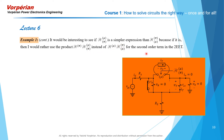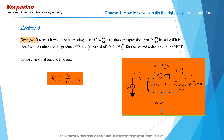Looking into port mu with port pi shorted: shorting pi sets V_pi to zero, causing the dependent current source to drop out. With the generator gone, V_T appears directly across R_CE, and the test current I_T flows entirely through R_CE since there is no current in the other branch under null conditions. So R_mu_pi turns out to be simply R_CE — indeed simpler than R_pi_mu — so we will use this second form for the second-order term in the 2EET.